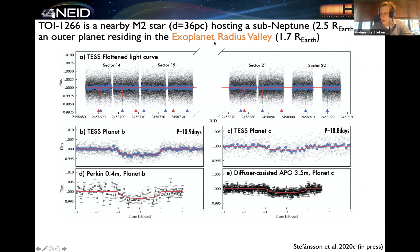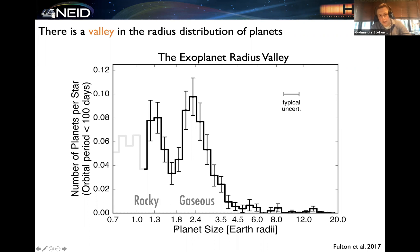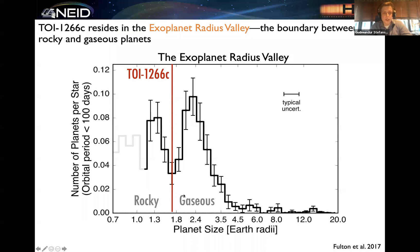One very interesting thing about this system is that the outer planet, planet C, resides in the so-called exoplanet radius valley because it has a 1.7 Earth radius radius. In a very seminal paper in 2017, Benjamin Fulton et al. published work showing a statistically significant dip or valley in the radius distribution of planets from the California Kepler survey sample, showing two peaks with a clear valley in the radius distribution of small planets. This has been interpreted as the dividing line between rocky super-Earths on one side and gaseous mini-Neptunes on the other. Interestingly, TOI 1266C has a radius right in the middle of this valley.